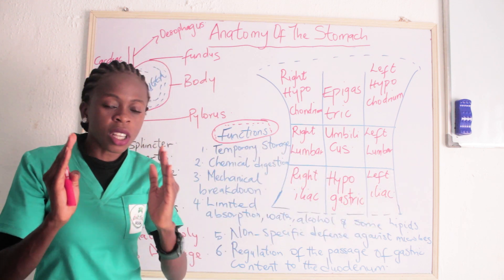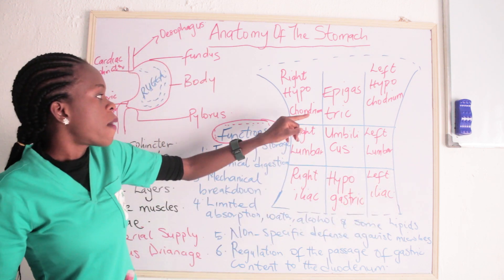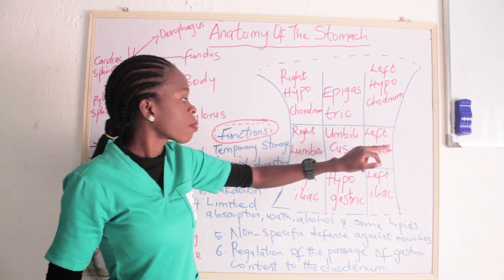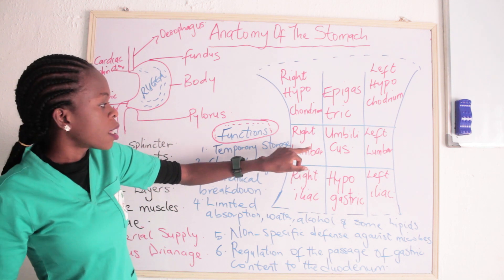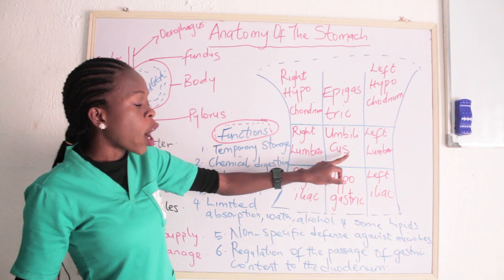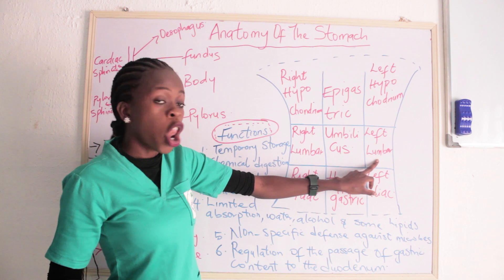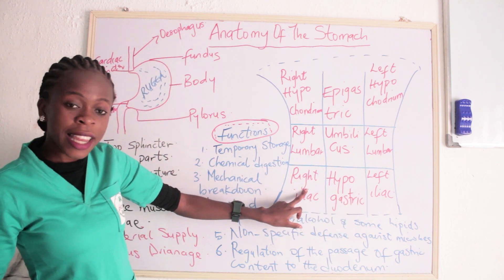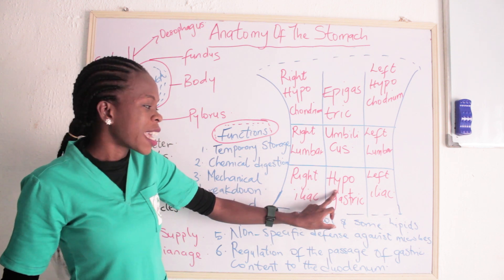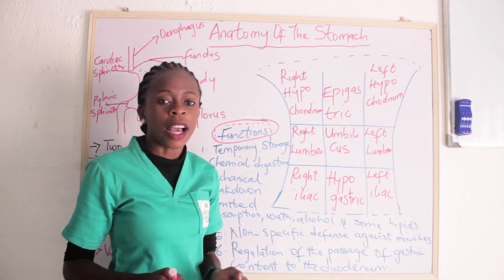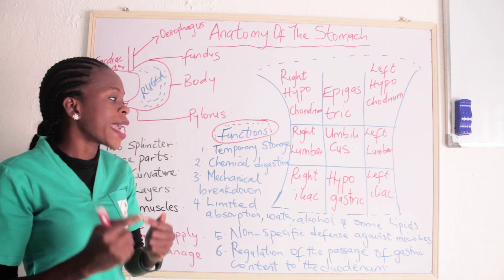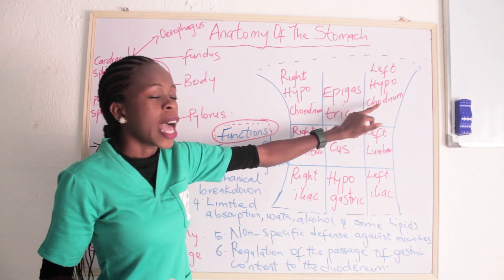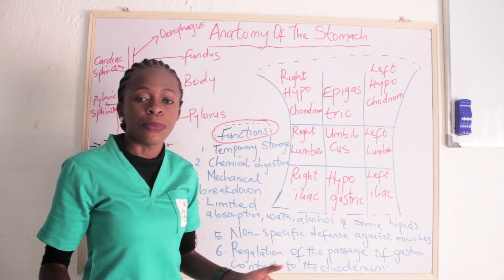To recap the nine regions of the abdomen: right hypochondriac, epigastric, and left hypochondriac; then right lumbar, umbilical, and left lumbar; then right iliac, hypogastric, and left iliac. The stomach occupies the umbilical, the epigastric, and the left hypochondriac regions of the abdomen.